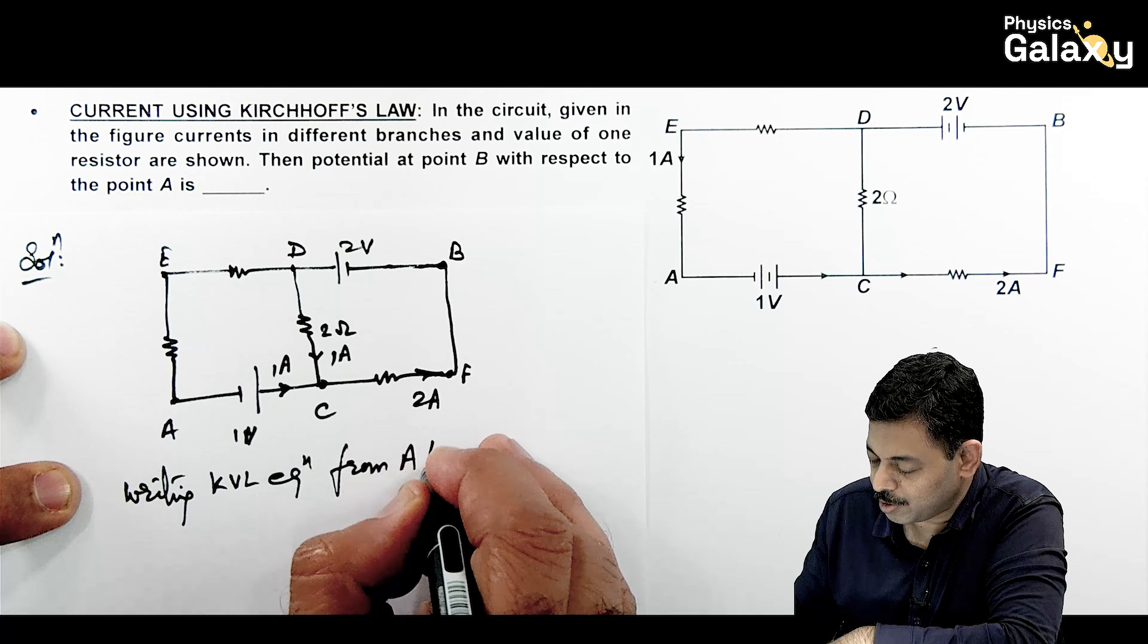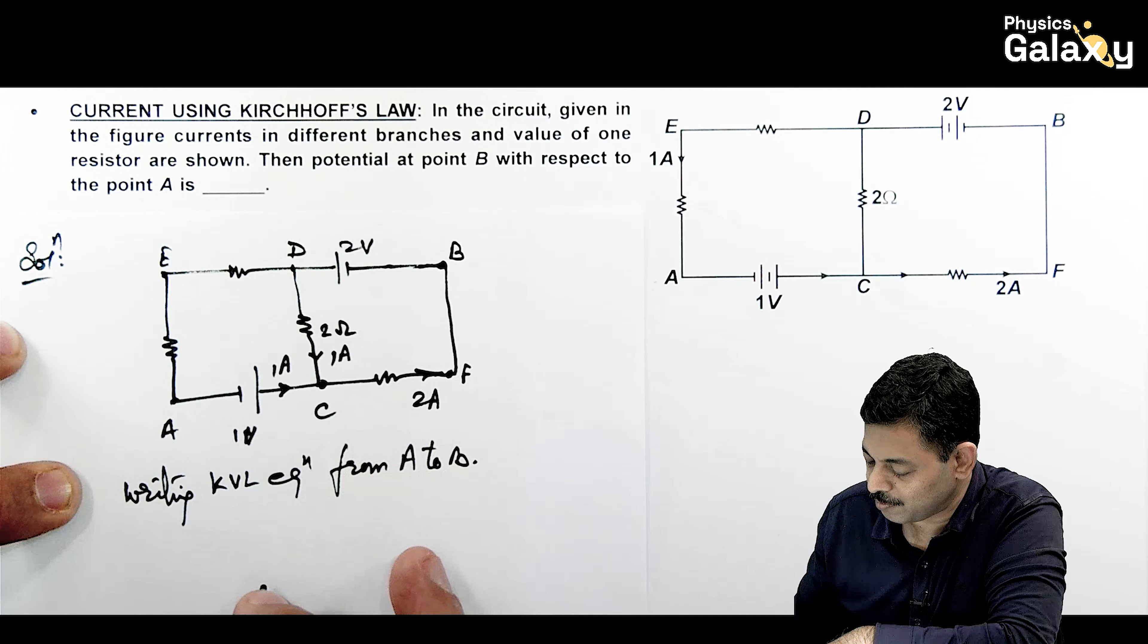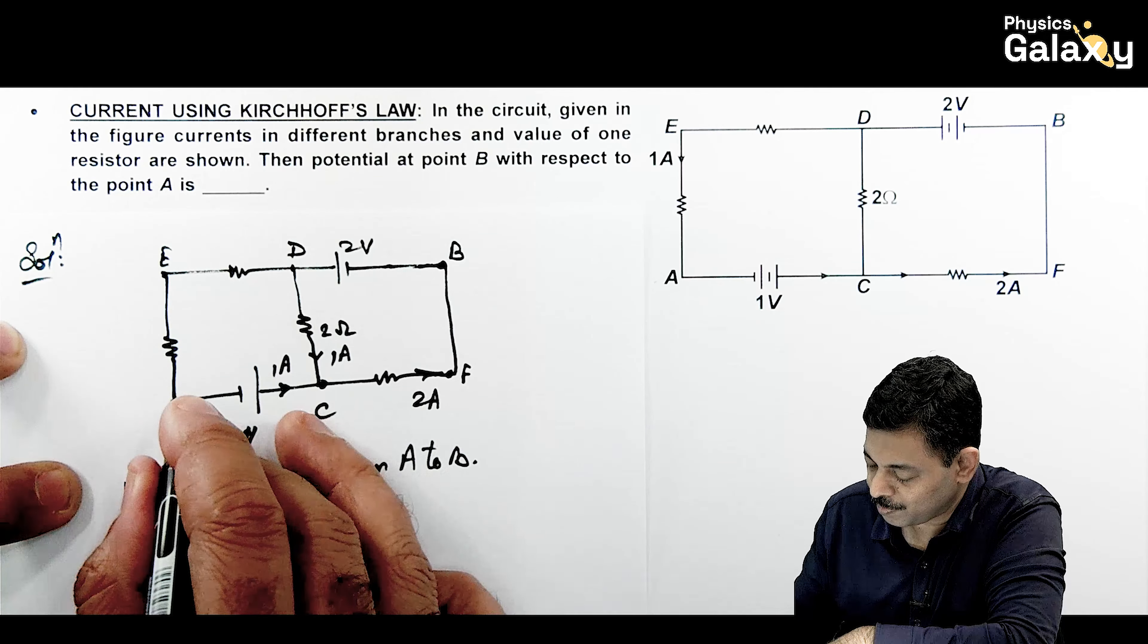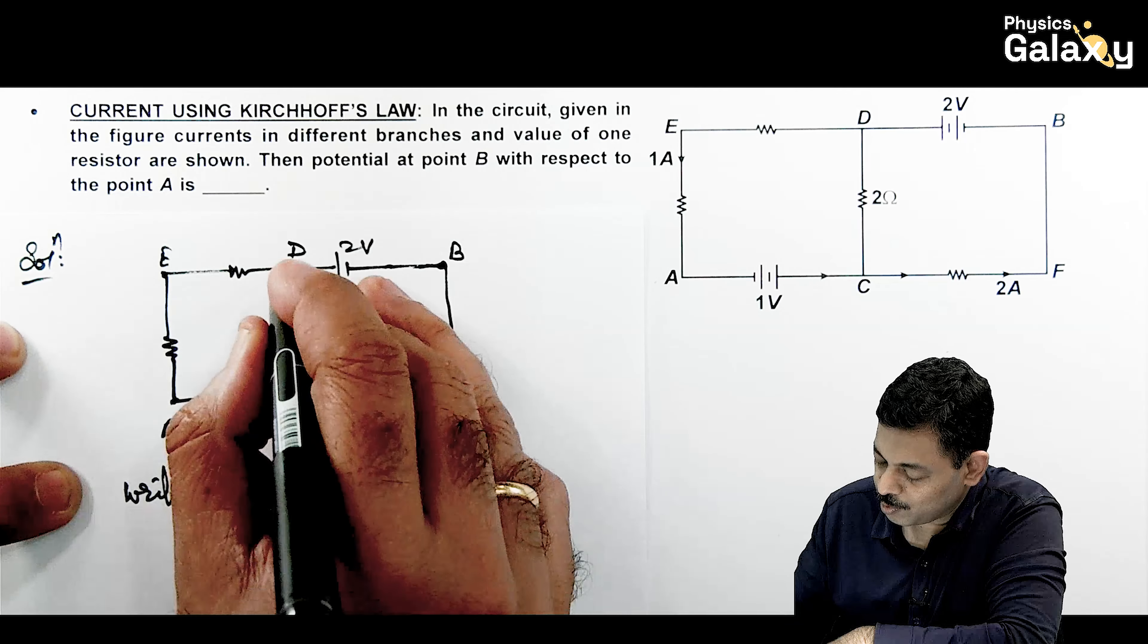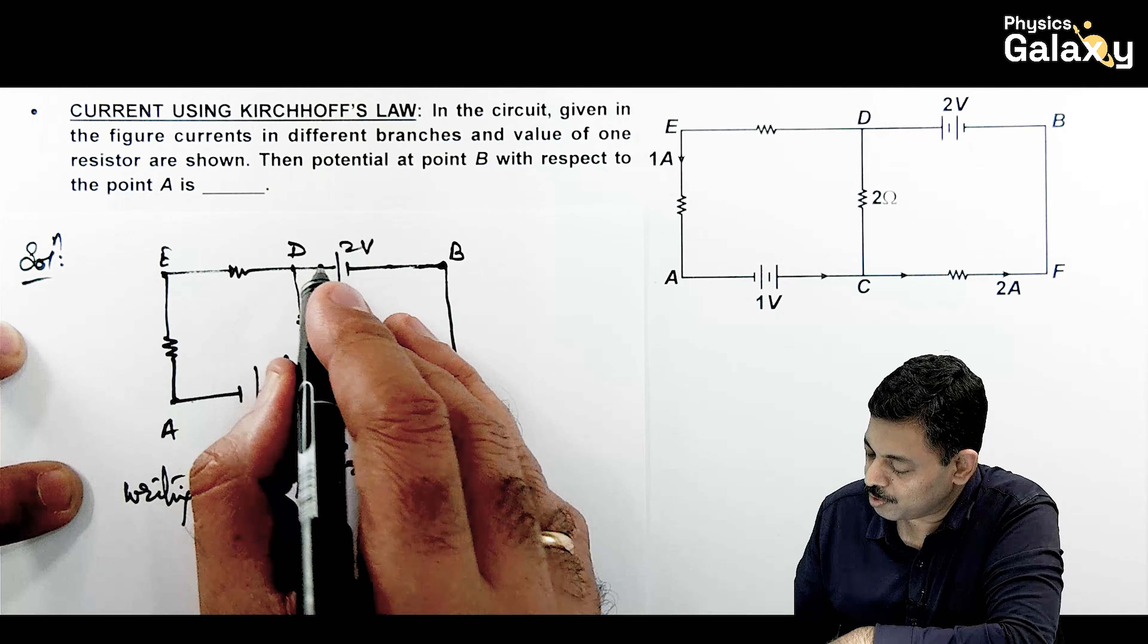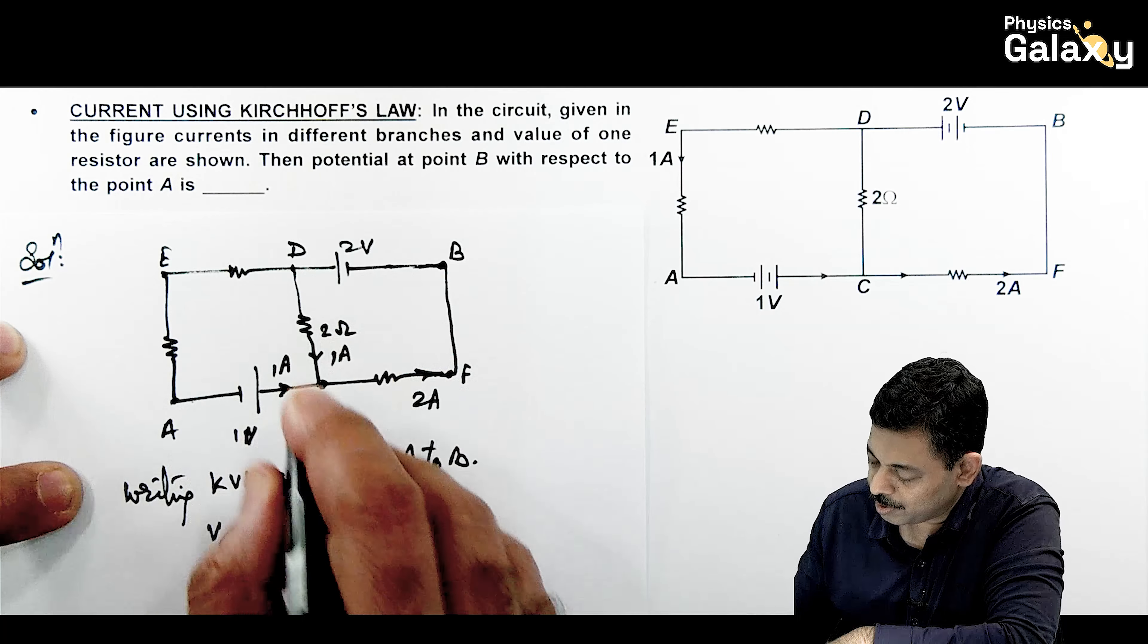Directly we can write KVL equation from A to B. If we take the KVL equation, this is VA, this is plus 1 volt, and here it will be again plus 1 volt.